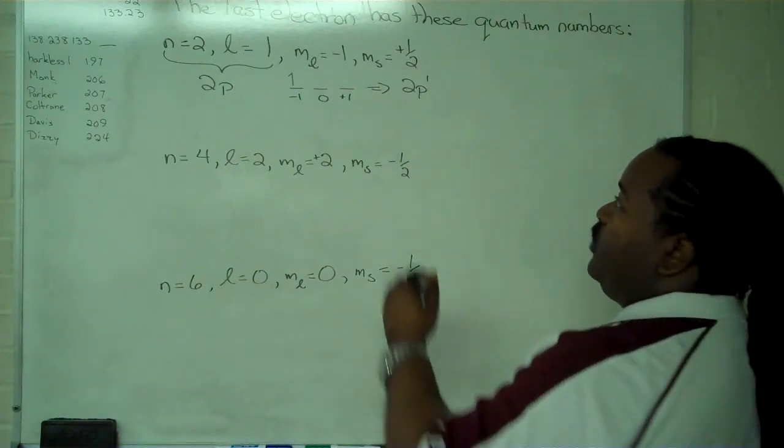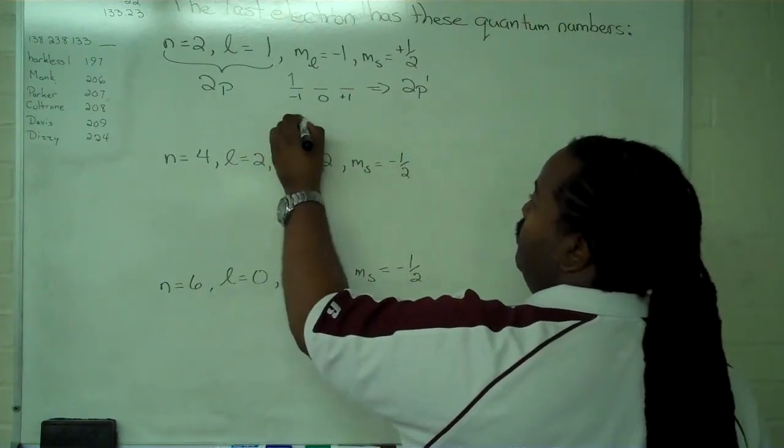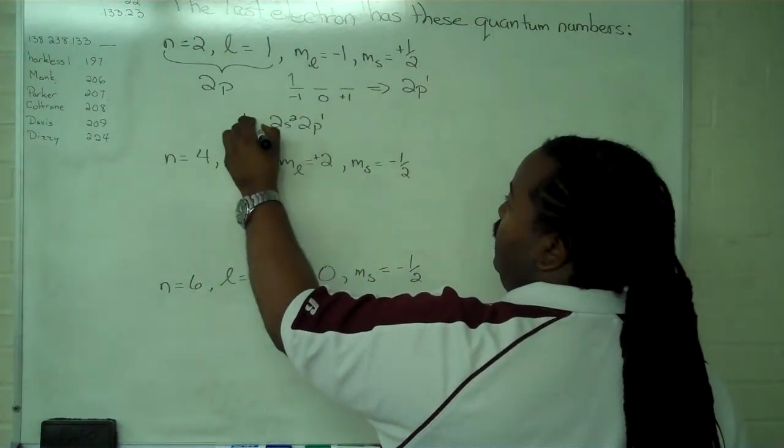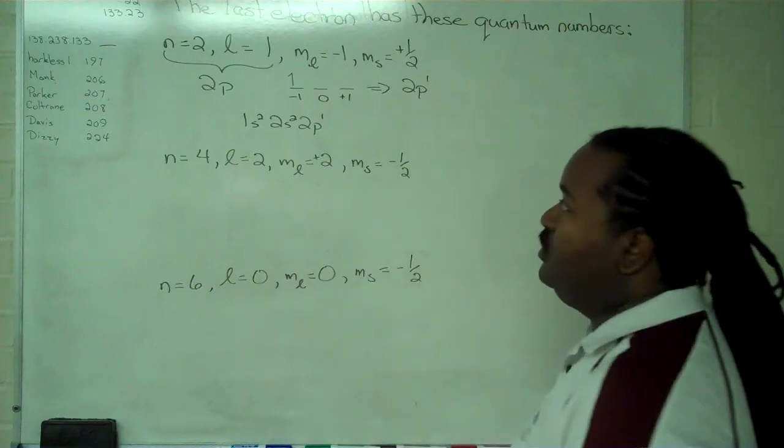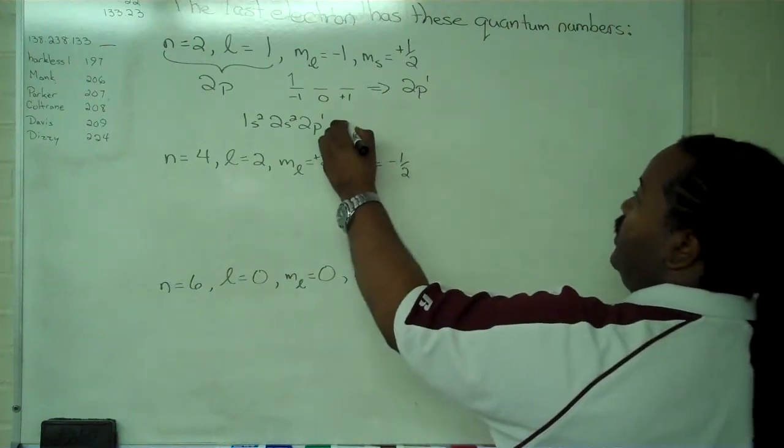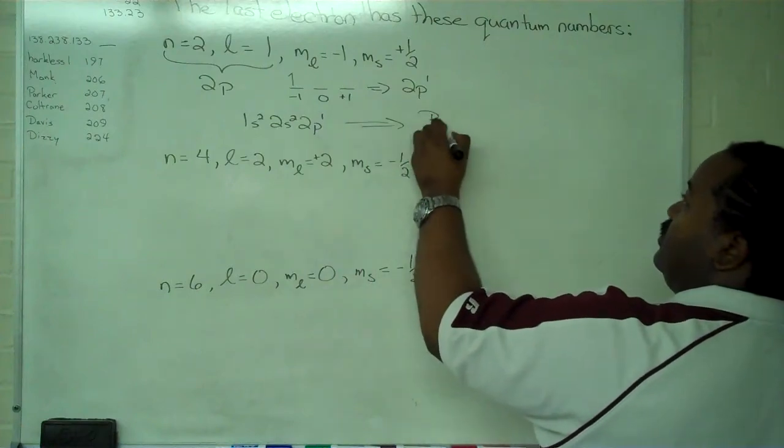Next, we use the Aufbau principle to determine what comes before. That's a 2s, completely filled, and a 1s, completely filled. So the only thing that has this is boron, and that gives us the identity of our element.